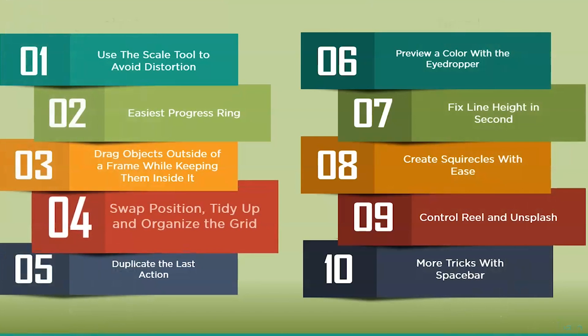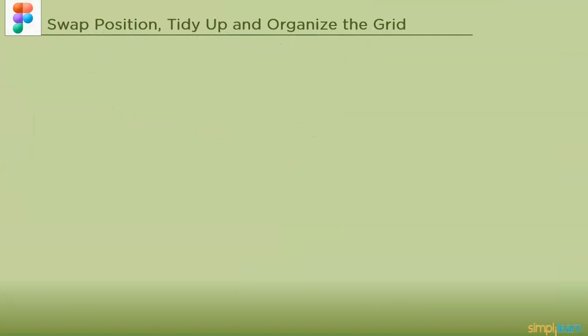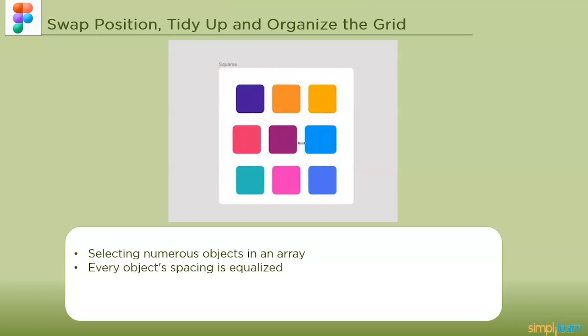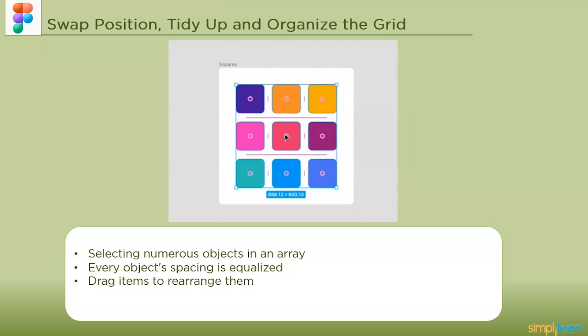The next one is swap position, tidy up and organize the grid. Organize your design by selecting numerous objects in an array and then clicking the grid symbols in the corner. As a result every object's spacing is equalized and you may drag items to rearrange them and change their spacing.